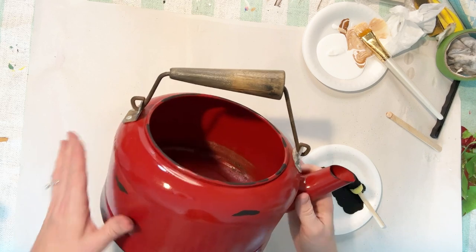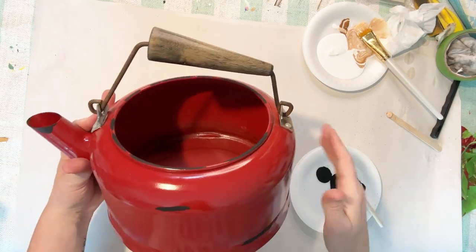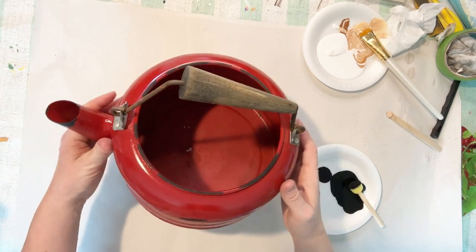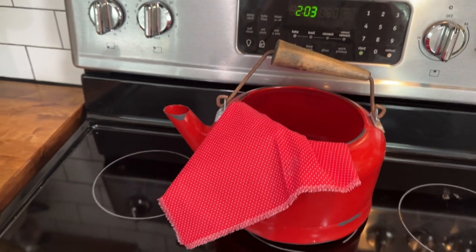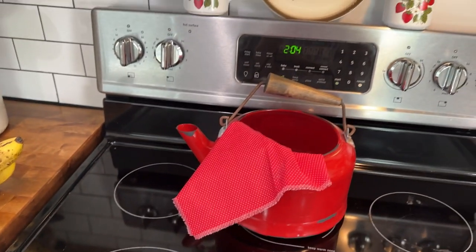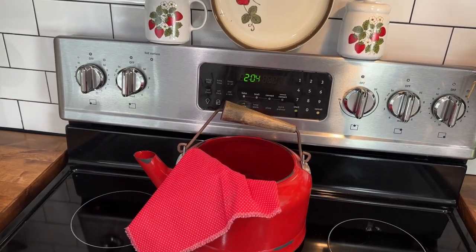But in the end, it turned out so dang cute. What an amazing transformation from this plain old rusty kettle to this gorgeous red enamel wear looking kettle. I hope you all enjoyed this. It was super easy to do.